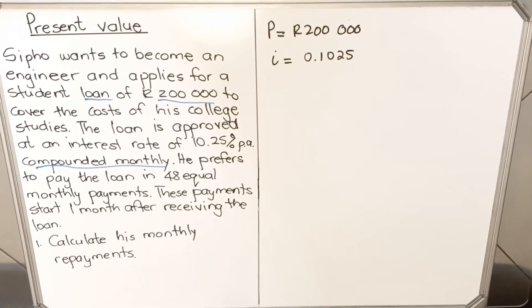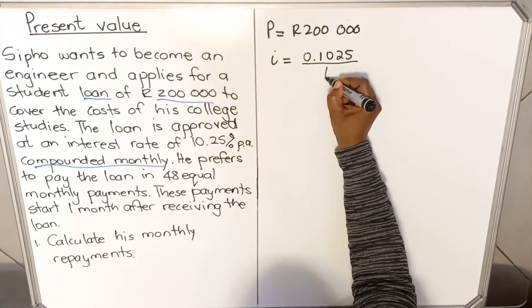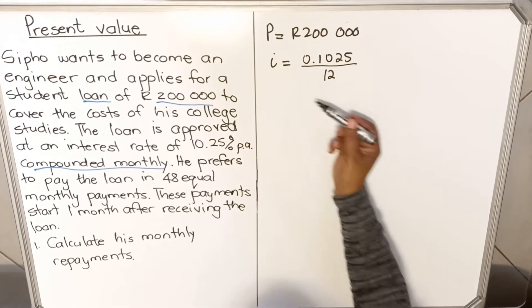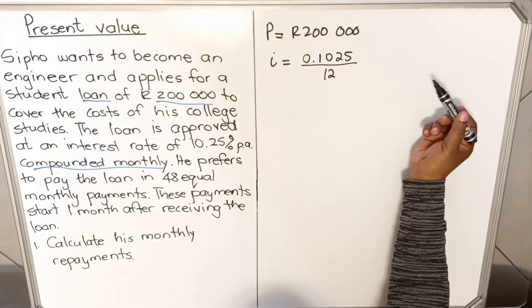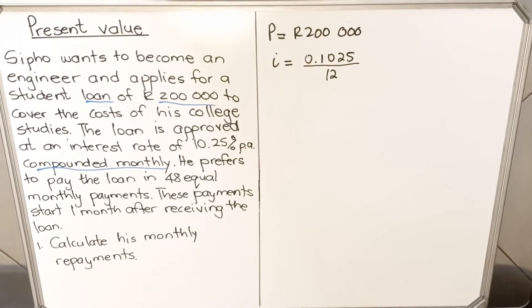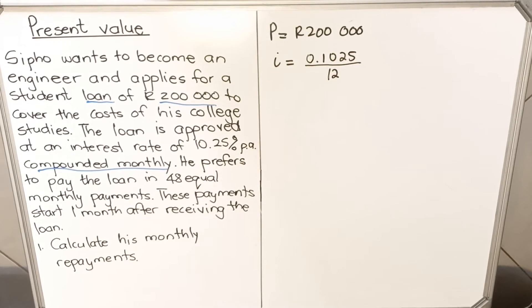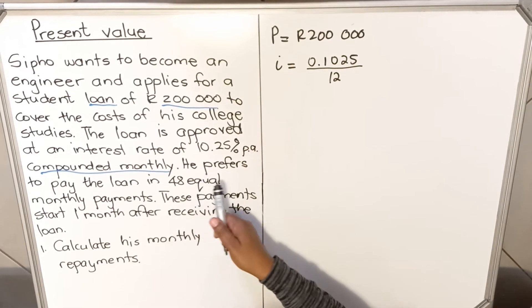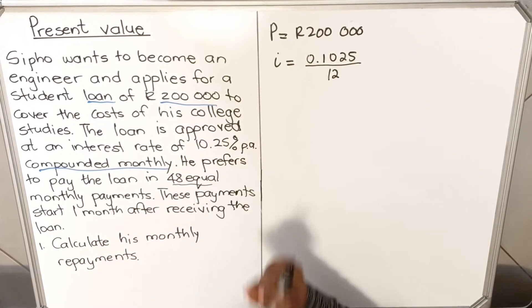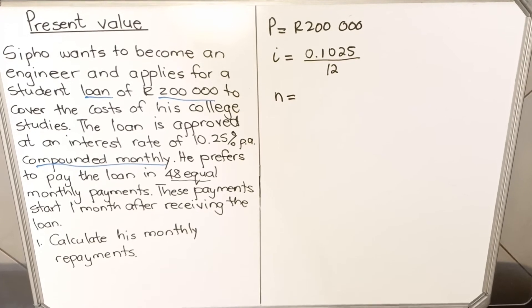When you get a compounded question, you ask yourself how many months in a year. There are 12 months in a year, so it means that he's going to pay this amount 12 times. They're going to divide it by 12. When you're dealing with these questions, don't calculate it out and have a decimal because you have to round it off. So leave it as a fraction. It's better like that, it's not rounded off. Because in financial maths we only round off our final answer. Then, he prefers to pay the loan in 48 equal payments.